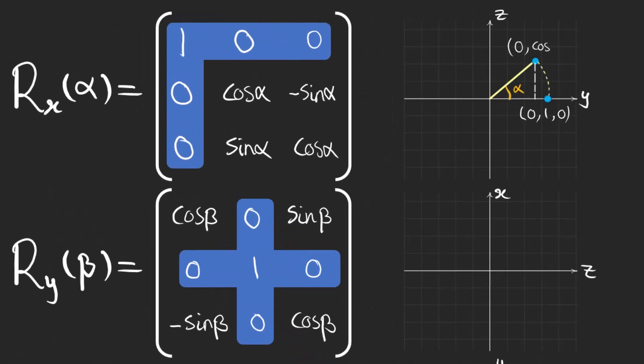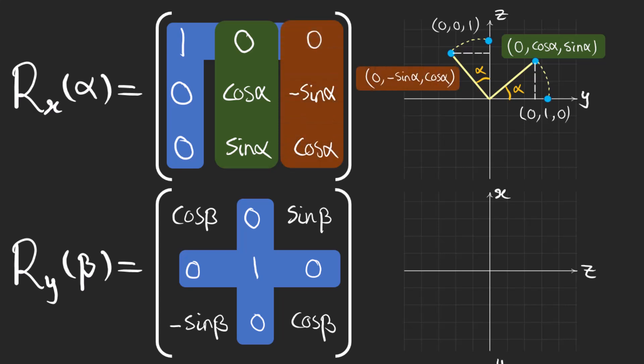If we have a point on the y-axis and rotate by alpha counterclockwise about the x-axis, the y and z components change to cosine alpha and sine alpha. In the same way, if we have a point on the z-axis and rotate by alpha in the same direction about the x-axis, the y component changes from 0 to minus sine alpha and the z component changes from 1 to cosine alpha.